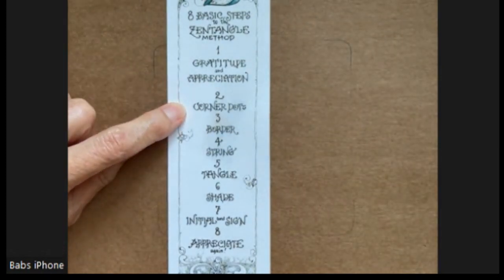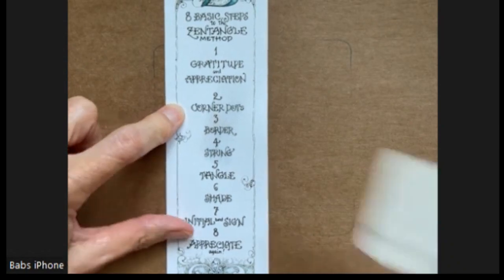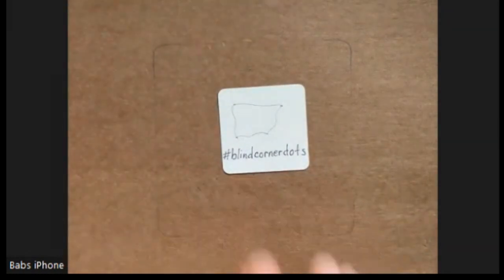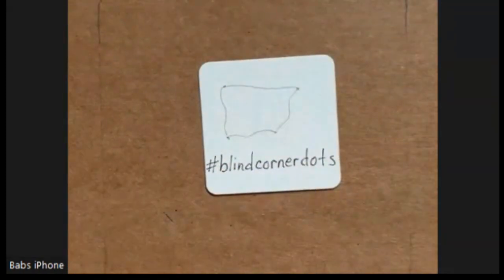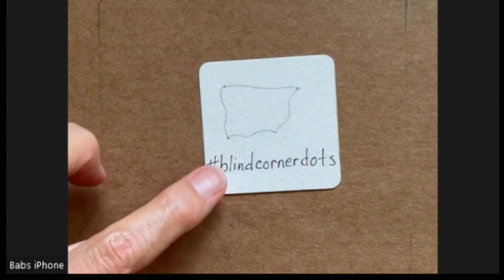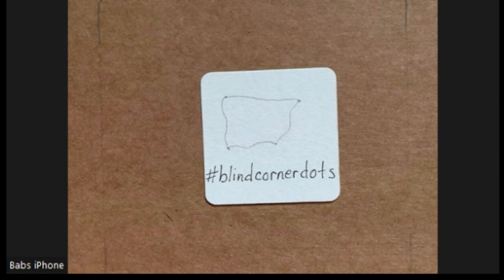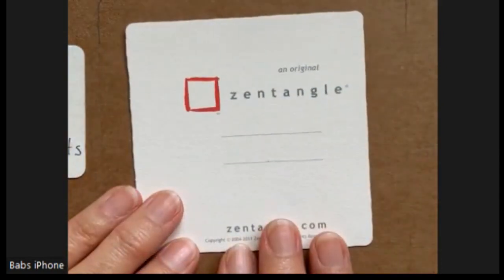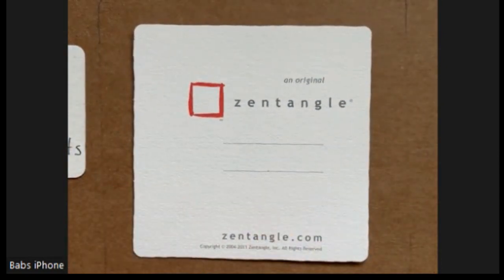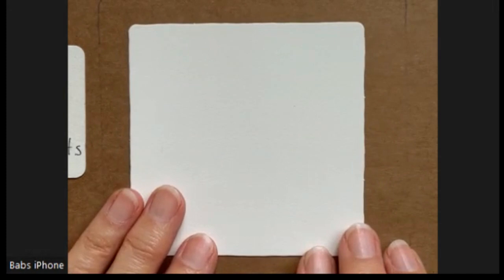And next we do the corner dots. Well, this has been around for a while, blind corner dots, but I just learned about it yesterday. So thank you to Sandy Kelly Jones for sharing that. Basically, you just close your eyes to put your corner dots down, and I'm going to do that today. I'm going to use a three and a half inch Zentangle tile, and I'm going to use the corner dots to make my initial border, but I'm going to have my eyes closed.